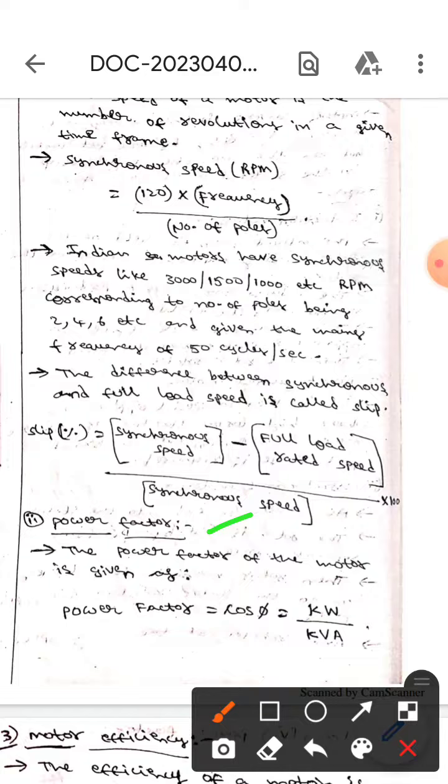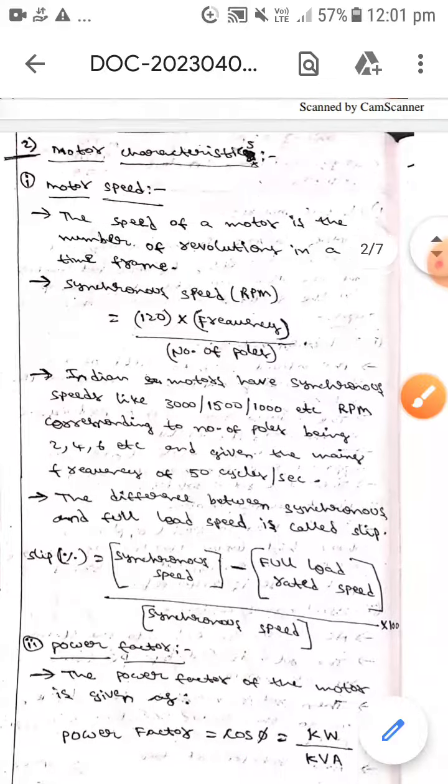The power factor of motor is given by the formula which is equals to cos phi, which equals kW by kVA. This is all about the motor characteristics.